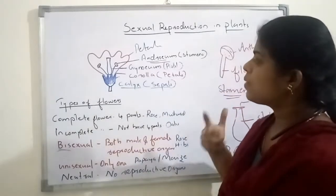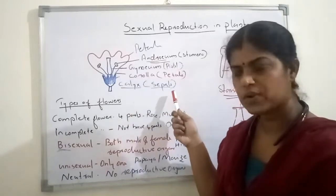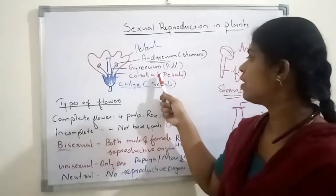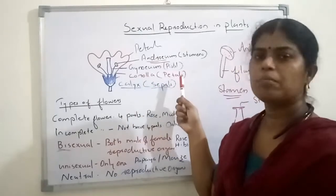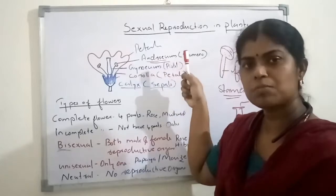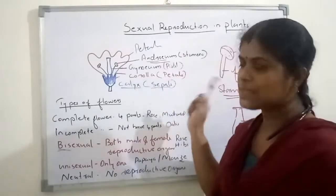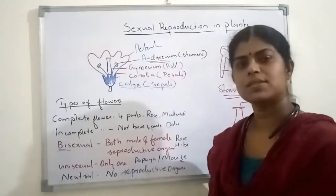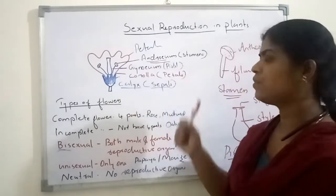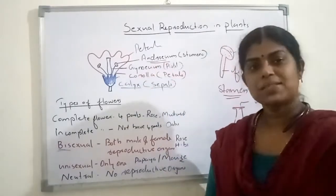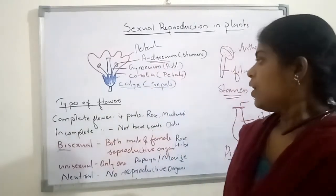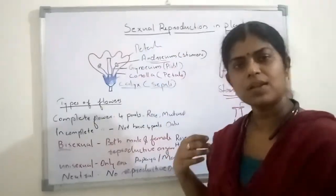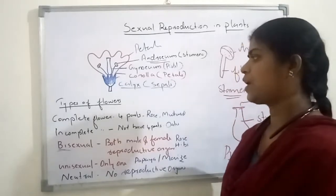So once again, what are the parts of the flower? Calyx — the outermost whorl, made with sepals. Inner to the calyx is the corolla — the colorful part of the flower, made with petals. Inner to that is the androecium — the male part of the flower, made with stamens. And the innermost whorl is the gynoecium — the female part of the flower, made with pistils. This is the basic structure of the flower. According to the presence of these parts, we can classify flowers into different types.